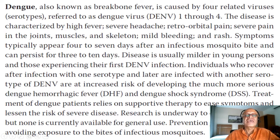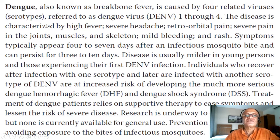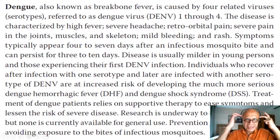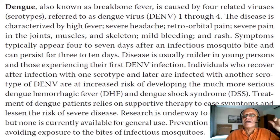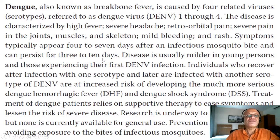Dengue, also known as breakbone fever, is caused by four related viruses or serotypes referred to as dengue virus DENV-1 through DENV-4. The disease is characterized by high fever, severe headache, retro-orbital pain, and severe pain in the joints, muscles, and skeleton, along with mild bleeding and rash.